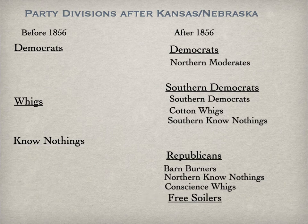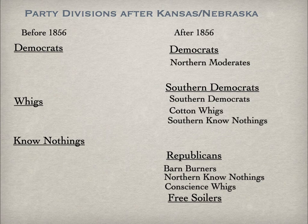As I noted in a previous lecture, the passage of the Kansas-Nebraska Act had dire consequences for the party structures as they existed before 1854. The Whig Party broke into northern and southern wings — the northern wing, against Kansas-Nebraska and against slavery, called the Conscience Whigs, and the southern wing, pro-Kansas-Nebraska and pro-slavery, the Cotton Whigs.